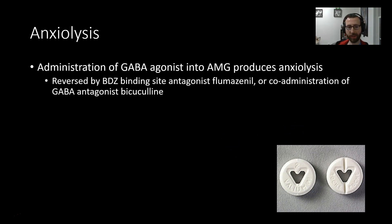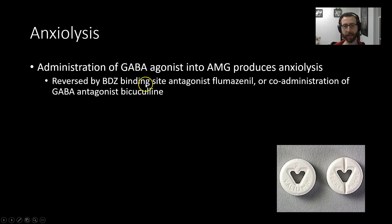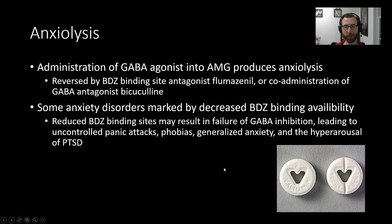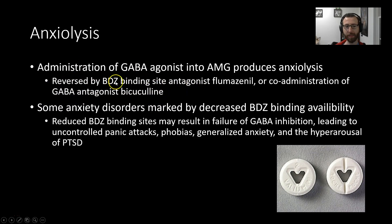These types of drugs can produce a reduction in anxiety. Administering GABA agonists into the amygdala can reduce anxiety, and this is reversed by using a benzodiazepine binding site antagonist, or by co-administration of a GABA antagonist like bicuculline, which competes for the principal binding site. This demonstrates that the benzodiazepine needs access to the allosteric binding site, but also won't do anything on its own — if GABA is blocked from its site by bicuculline, benzo-class drugs cannot substitute for GABA signaling.